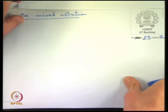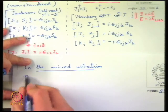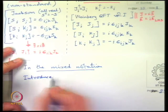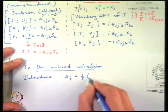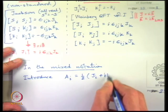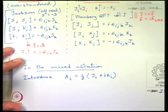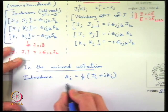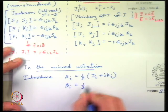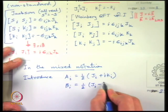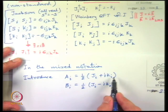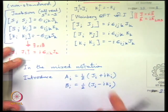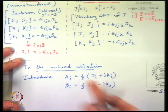In the mixed notation, which is what we will stick to because it is standard in quantum field theory, we now introduce A_i equal to one half (J_i + i K_i) and B_i equal to one half (J_i − i K_i). We note that this way A and B are Hermitian, because K is anti-Hermitian but multiplied by i, and J_i is Hermitian to begin with.